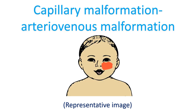Capillary malformation-arteriovenous malformation syndrome is caused by RASA1 mutations. It is characterized by capillary malformations, arteriovenous malformations, and arteriovenous fistula. Arteriovenous malformations can cause overgrowth of the extremity — Parkes Weber syndrome.